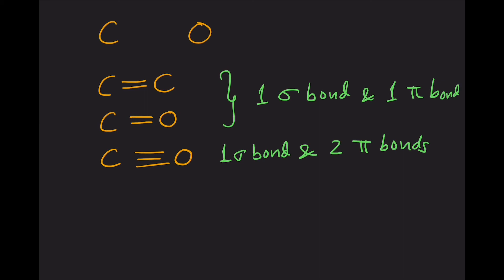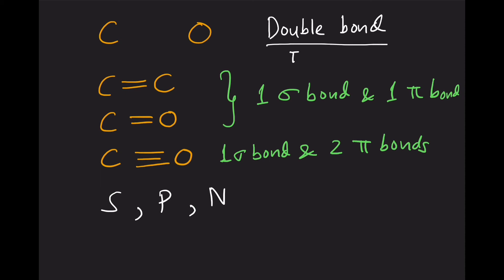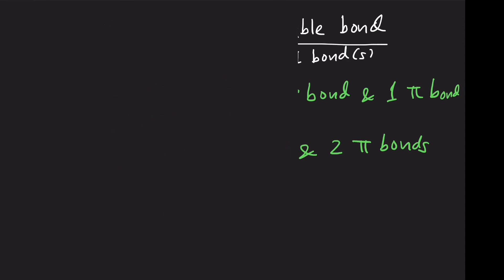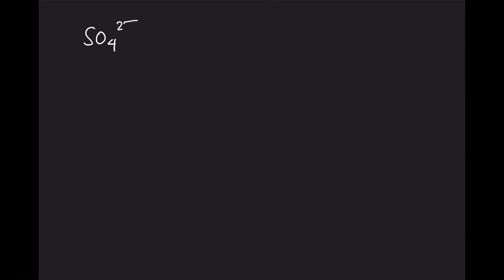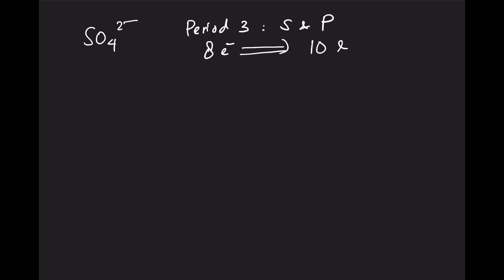Atoms that can form double bonds include sulfur, phosphorus, nitrogen, carbon, and oxygen. These atoms have not only sigma bonds but also pi bonds. For atoms belonging to period 3 or higher, there can be exceptions to the octet rule — instead of 8 electrons, they can have up to 10 or even 12 electrons around them.